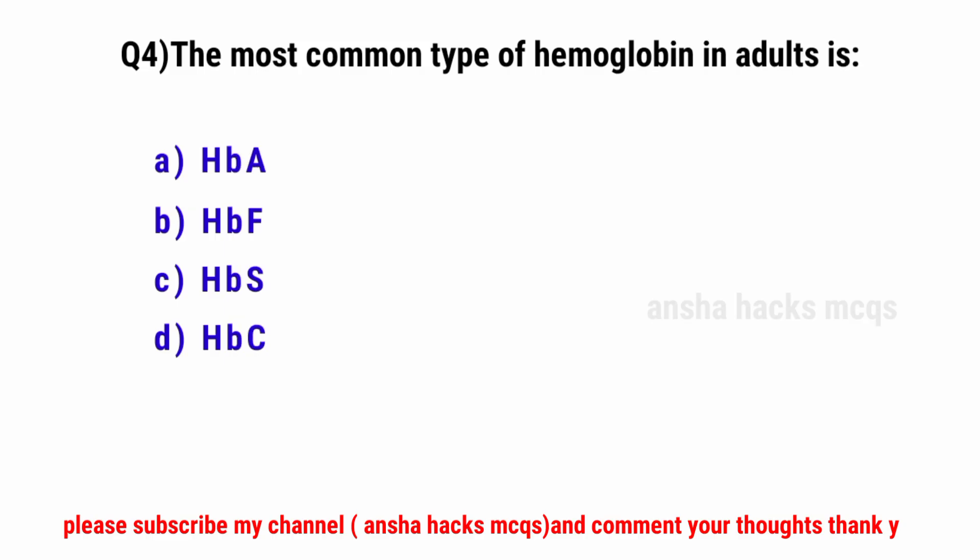Question No. 4. The most common type of hemoglobin in adults is — the correct option is A: HbA.